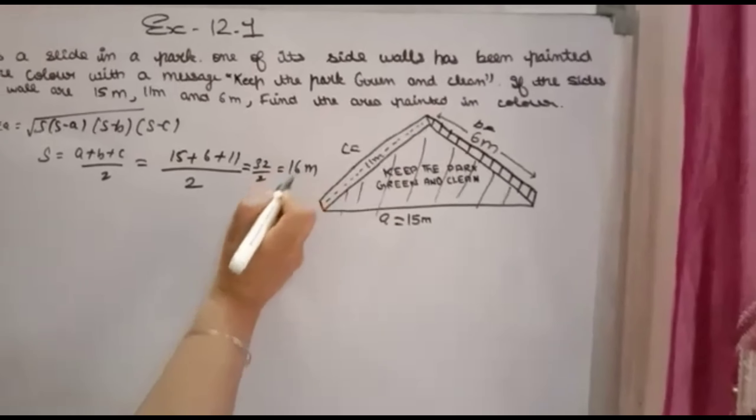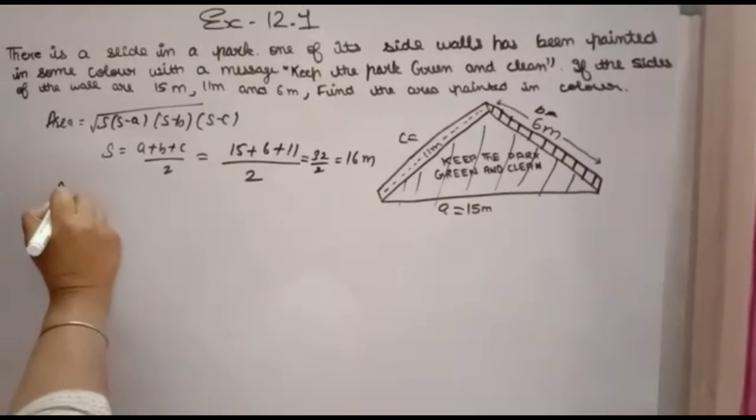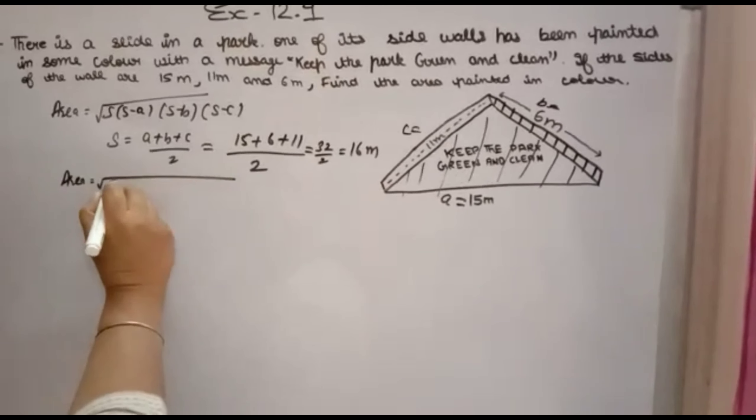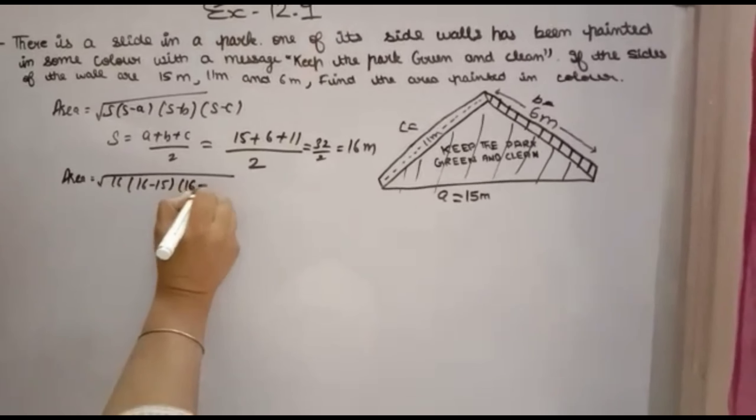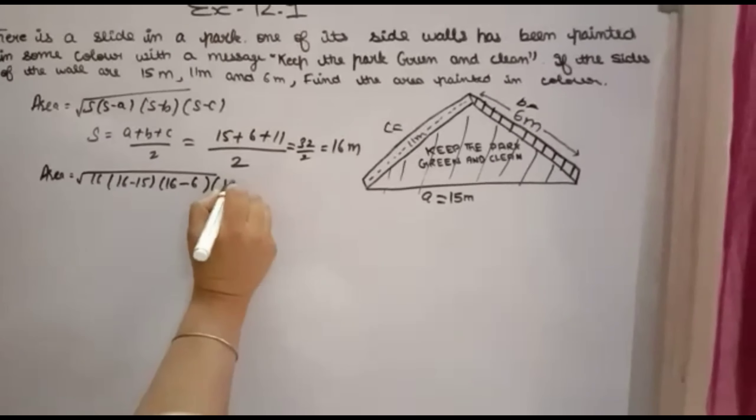Area will be √[16(16-15)(16-6)(16-11)] = √(16×1×10×5).